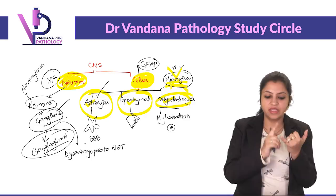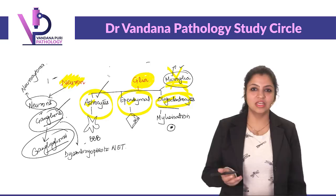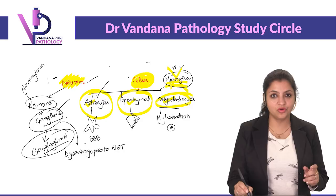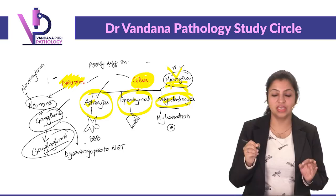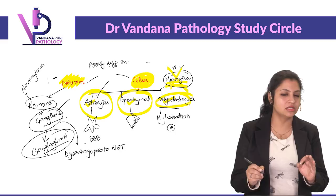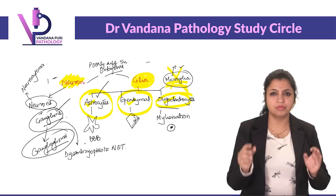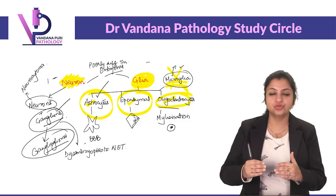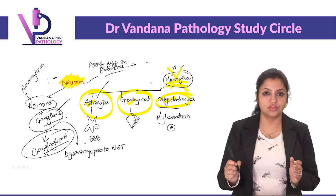Now, we have a category of tumors that does not arise either from neurons or from glia. These are called poorly differentiated tumors, also known in WHO 2016 as embryonal tumors. The majority of them usually occur in children, and they show no differentiation in any lineage — that is why they are called poorly differentiated tumors.